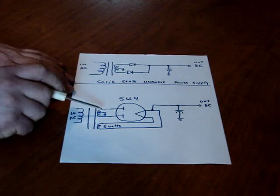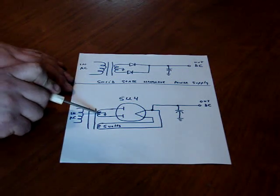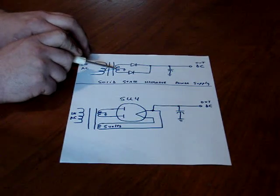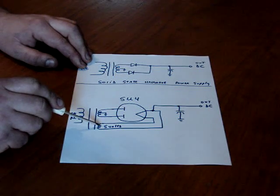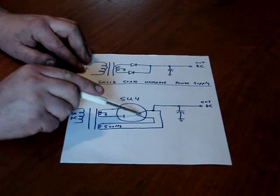Same thing, you have a transformer. This transformer has two secondaries. It has the main secondary, which is the same as this one, and it also has a smaller secondary that puts out five volts for the heater.